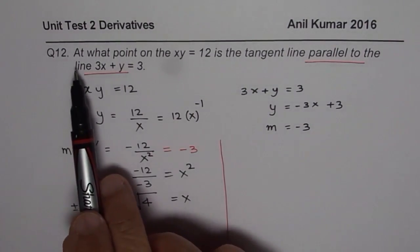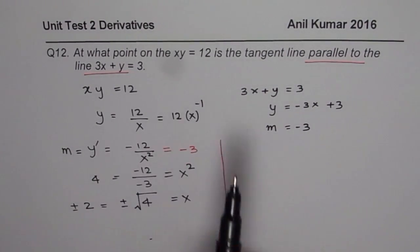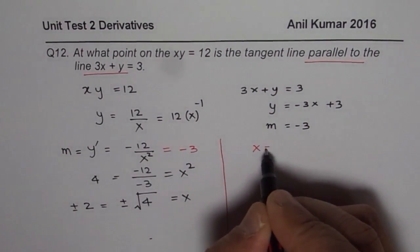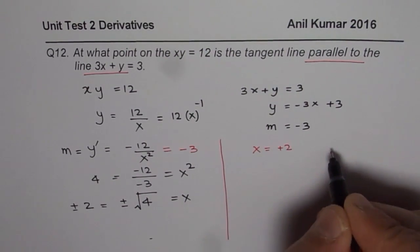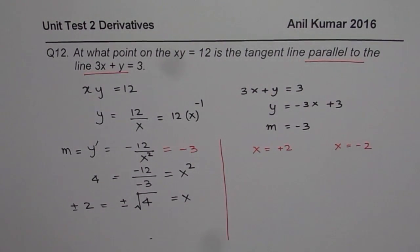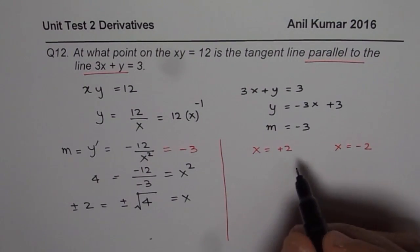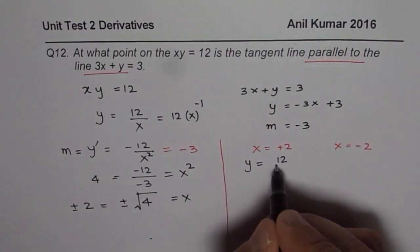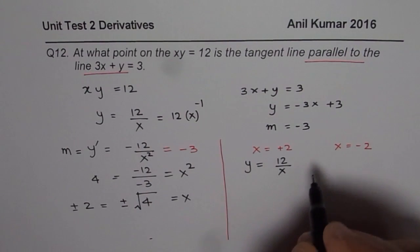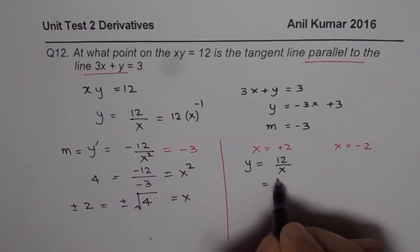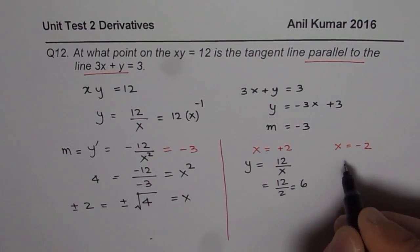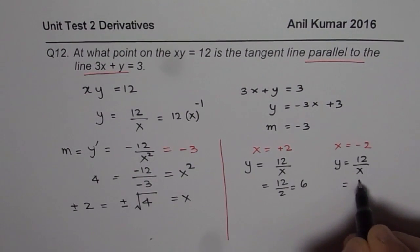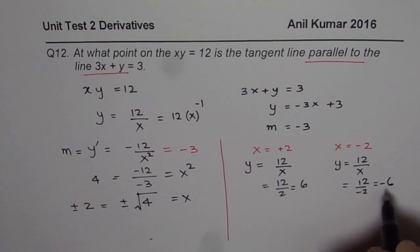Whenever we say at what point on xy, we need to find also the y coordinates. So we know x coordinate could be either plus 2 or x coordinate could be equals to minus 2. So for both cases, find out what y should be. So y is 12 over x. So in this case, it is going to be 12 over 2, which is plus 6. And here, y will be 12 over x, which is 12 over minus 2, which is minus 6.